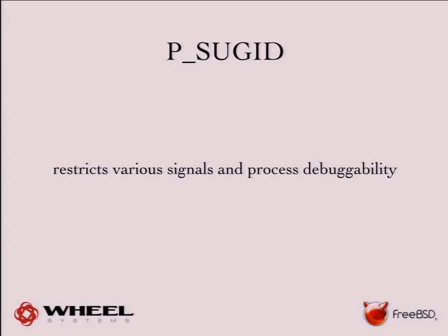In the kernel there is the p_sugid flag, which is set when you do setuid or execute a setuid binary. It restricts various interesting things. For example, OpenSSH sandboxing drops privileges to the SSH user, but every single SSH session sandbox runs as the same user. In theory, if you break into one sandbox, you could use ptrace to jump to another sandbox. But because of this flag, that is not possible. It also restricts which signals can be sent to other processes with this flag.